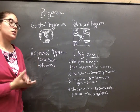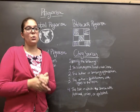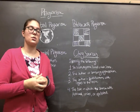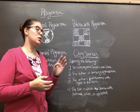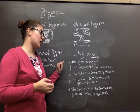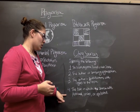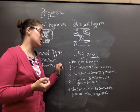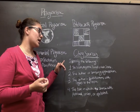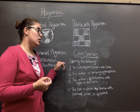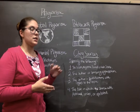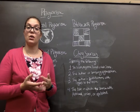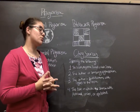Speaking of citing your sources, in order to orally cite your sources correctly you need to identify four things. First, you need to identify the book, magazine, journal, or web source that you got your information from.